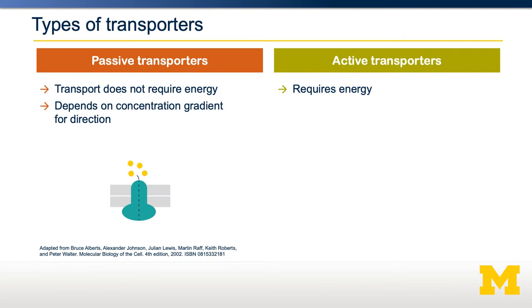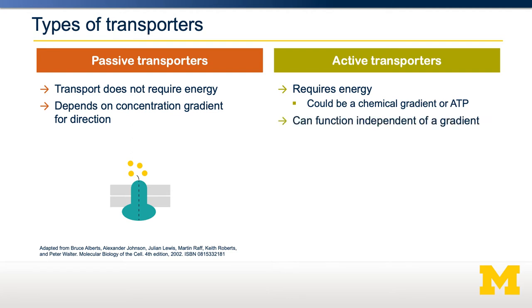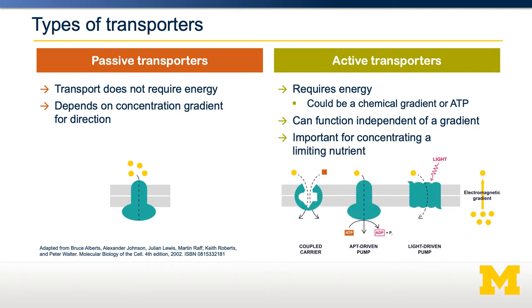Active transporters require energy, which could be provided by a chemical gradient or ATP. This means these transporters can function independent of the concentration gradient of the substance being transported. This is important if you're trying to concentrate or absorb a particular nutrient from one place to another — for example, if you're trying to absorb all the sugars out of your gastrointestinal tract, active transport would be more effective as the concentration decreases.